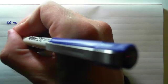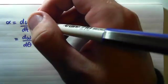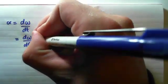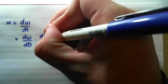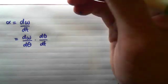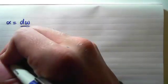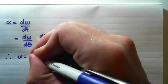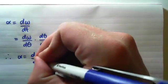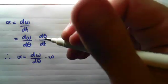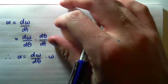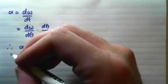We know that α = dω/dt. But if we decompose dω/dt using the chain rule, we can write it as the change of angular velocity with respect to angle — that is, dω/dθ — multiplied by dθ/dt, which is simply omega. So therefore, α = (dω/dθ) × ω.